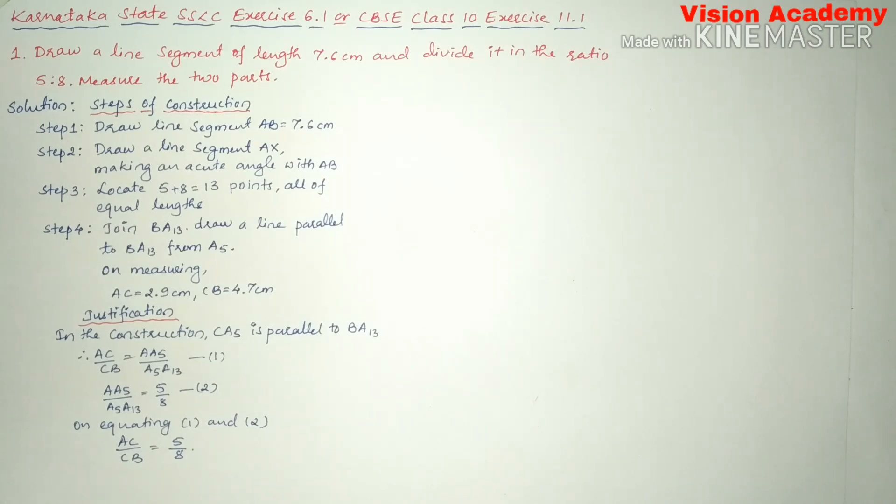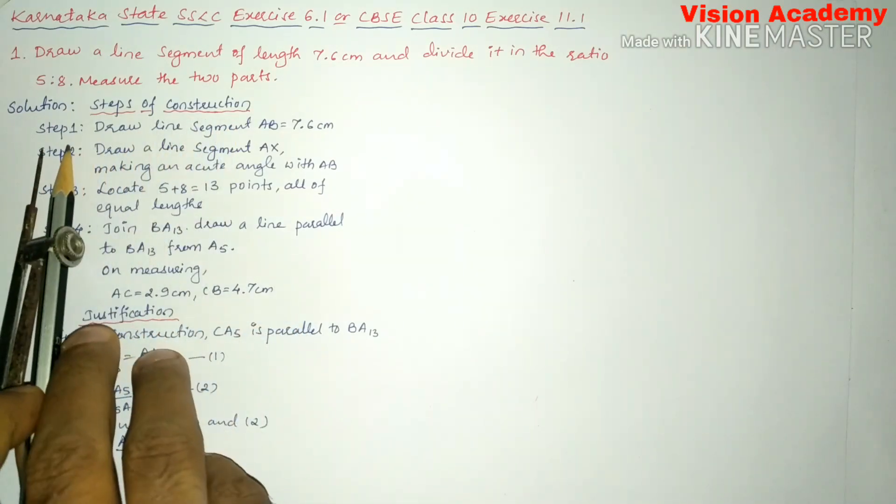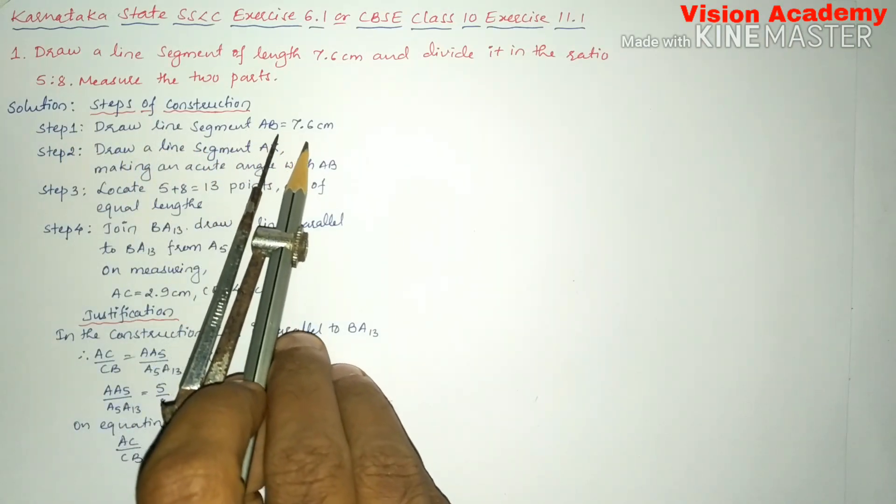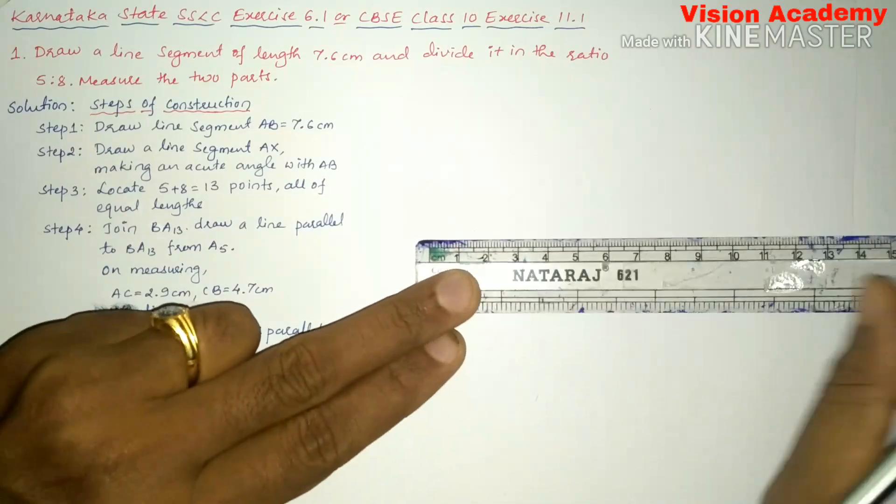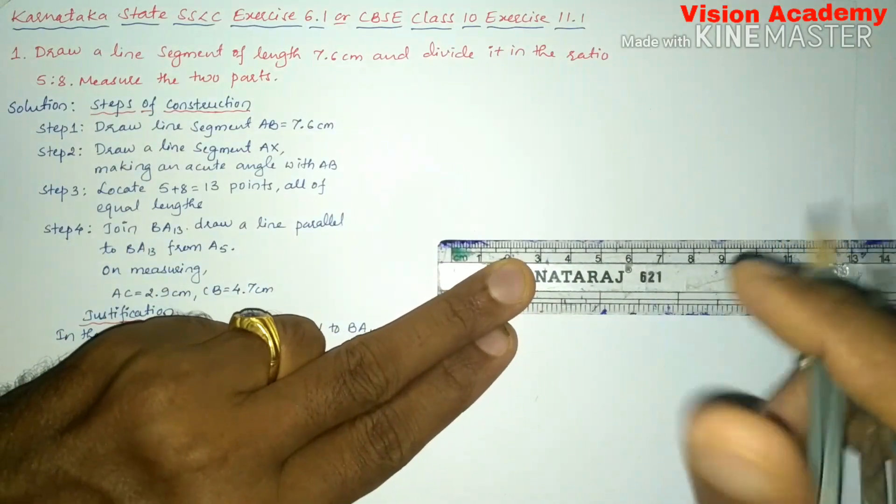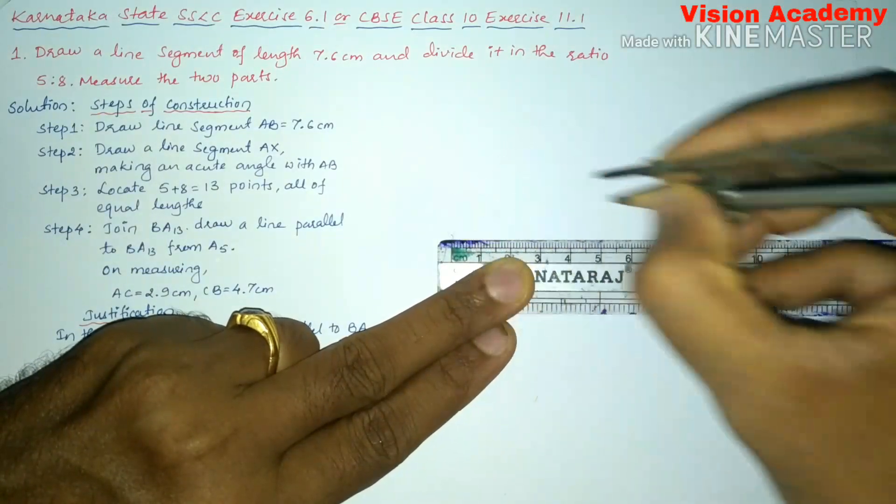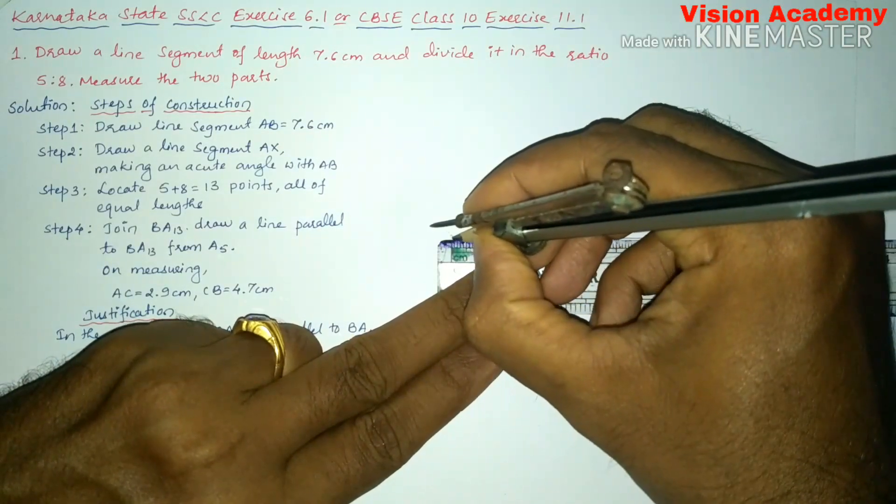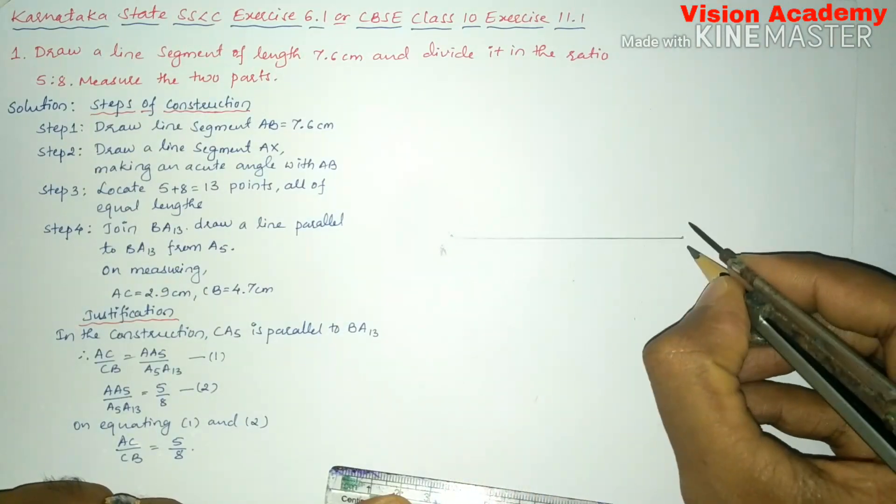Let us find the solution for the given problem. Here, steps of construction I have already written. Step one, draw line segment AB equal to 7.6 centimeter. So now let us draw a line segment that is 7.6 centimeter. Let us name this as AB.